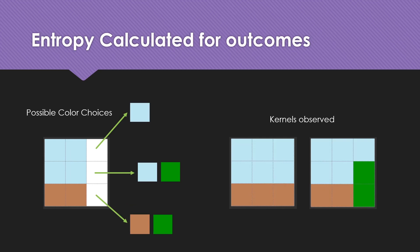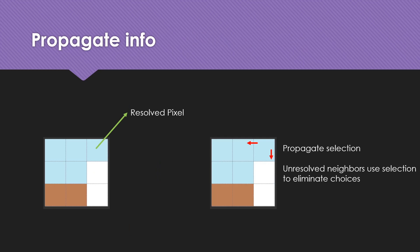By overlapping them, we can tell that the color choices highlighted in the image have entropies of 1, 2 and 2, where the top-right corner pixel has an entropy of 1 with only one choice. By resolving that pixel, we propagate the selection and help resolve any unresolved neighbors in the immediate vicinity of the resolved pixel.